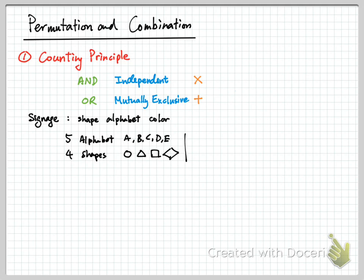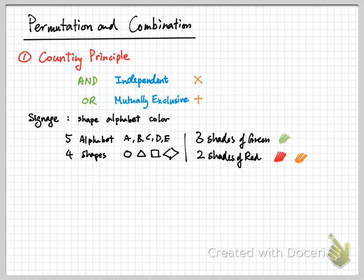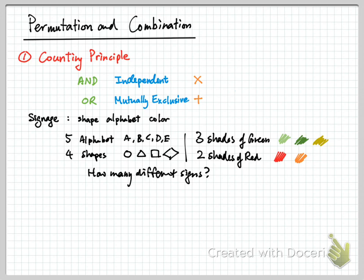You have three shades of green and two shades of red. For the red, say you have a red one and an orange one — two shades of red. For the green, you have light green, dark green, and yellow-green — three shades of green. So in total: two shades of red, three shades of green, four shapes, and five alphabets to choose from. The question is: how many different signs can you make?